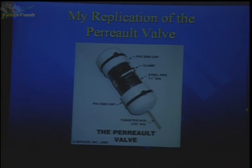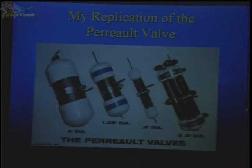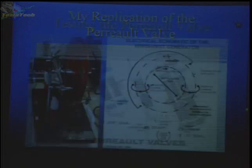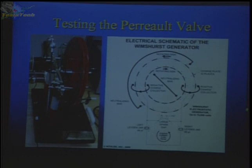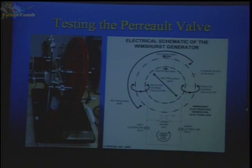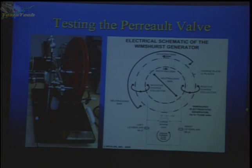I then needed a high voltage source to apply to this system. Here's a variety of valves that I built and tested — they come in a variety of diameters. This is my high voltage generator, just an ordinary Wimshurst generator that generates up to 75,000 volts DC. The circuit shows two Leyden jars, which are essentially capacitors, with a large adjustable spark gap, and collector plates for collecting the static electricity. It packs quite a punch, though it's low energy static electricity — but perfect for testing these valves.